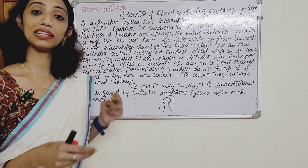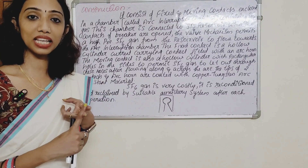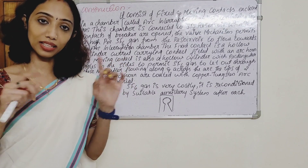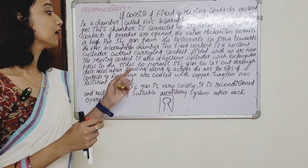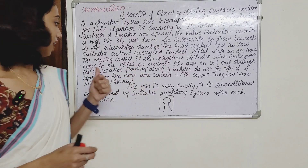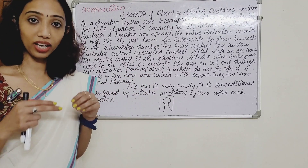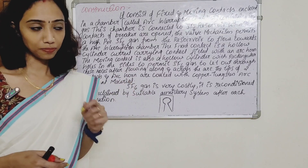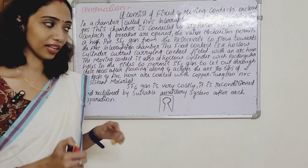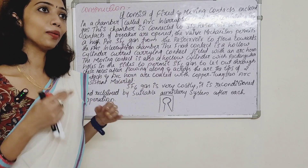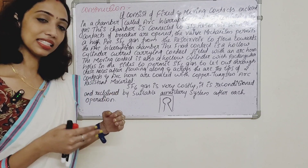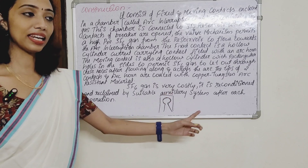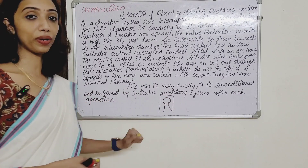The two contacts — fixed contact and moving contact — are coated with copper-tungsten arc-resistant material. SF6 gas is very costly, so we need to recondition it. It is reconditioned and reclaimed by a suitable auxiliary system after each operation.